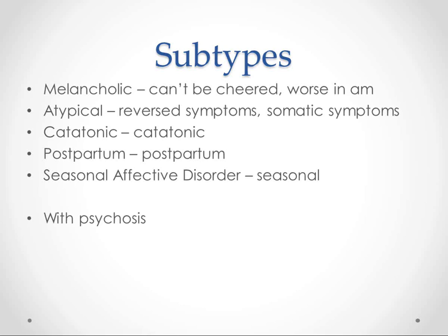Catatonia is when they just don't do anything — they kind of just sit there with a vacant stare. Postpartum depression is after you have a baby. Seasonal affective disorder is when you have bouts of depression that pretty much only happen in the darker months of the year. You can also have psychosis with depression, which is differentiated from other disorders like schizophrenia or schizoaffective by the fact that the psychosis only happens while you're having the depressed symptoms — it's not going to happen at other times. Otherwise, we'd probably be looking more at schizoaffective disorder.